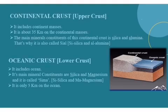Oceanic crust includes the ocean floor. Its main mineral constituents are silica and magnesium. That's why it is also called sima. It is only 5 km thick on the ocean. The arrangement of the crust is like a jigsaw puzzle.